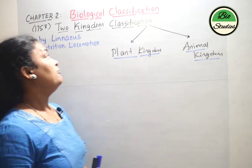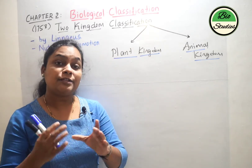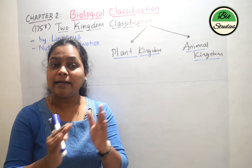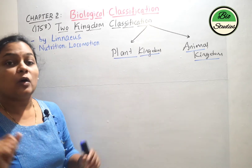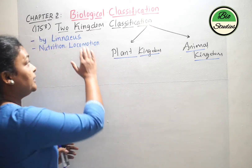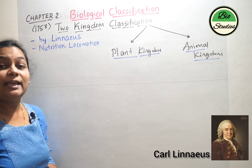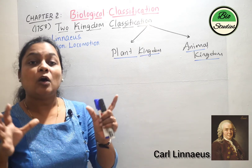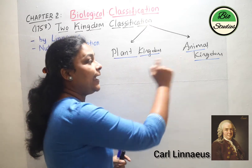In this video we will take two kingdom classification. In Aristotle's classification we have seen that Aristotle broadly categorized the organisms into two definite groups, that is plant group and animal group. Similar to Aristotle, Carolus Linnaeus also categorized the organisms into two groups, but those groups he referred to as kingdoms. Therefore it is called two kingdom classification. In the year 1758, Carolus Linnaeus introduced two kingdom classification, and according to it the organisms were grouped under two definite kingdoms called plant kingdom and animal kingdom.